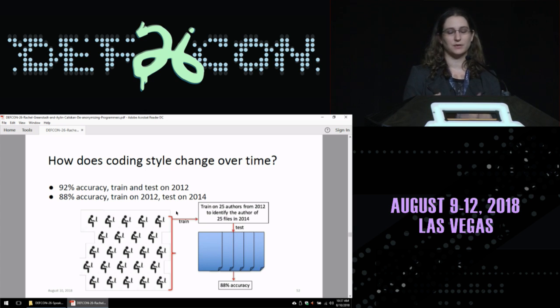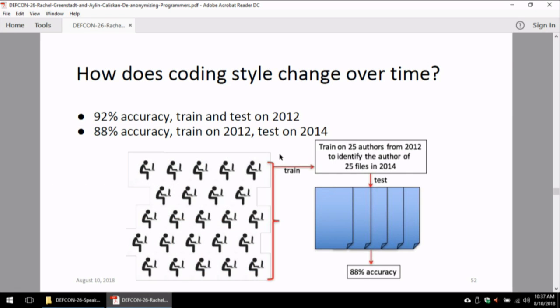We're also interested in how coding style changes over time. We looked at this competition where people are competing in both 2012 and 2014. When we train on 2012 and we test on 2014, the accuracy goes down from 92% on this 2012 set to 88% when we test on the 2014 set. So it's a little bit of a drop. I'd be more interested in maybe looking at even larger timescales than that or sort of particularly formative years maybe like university and things like that and how it affects people's programming style.